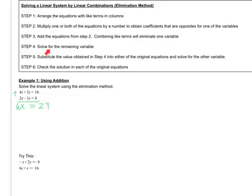If we take a look at step 4, it says to solve for that remaining variable. So we're going to solve for the x that we have left. All we have to do to solve for x is divide both sides by 6. And if we divide by 6, we get x equal to 4.